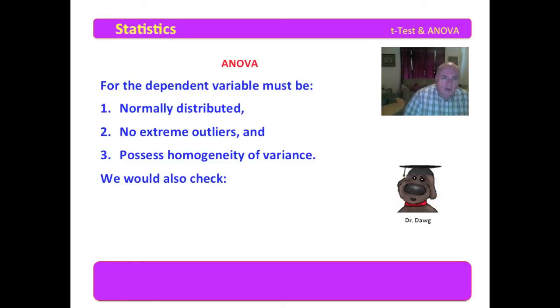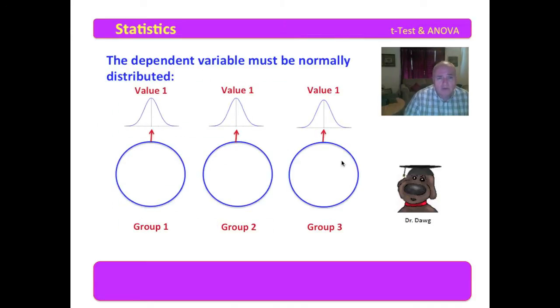We will also check the effect size and the power of analyses in a subsequent video. Remember that with ANOVA, we have two or more groups. We're looking at the same variable with values for each group. Those values must be normally distributed. You notice that I put the curve up there with the value of the dependent variable, so you remember that the dependent variable is the one that we're checking for normality. The group may be a nominal grouping, so there wouldn't be any need to check for any normality in its distribution.